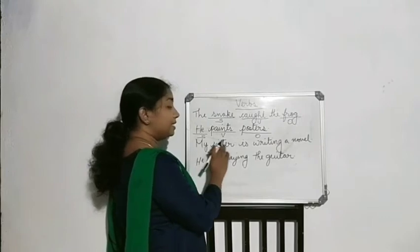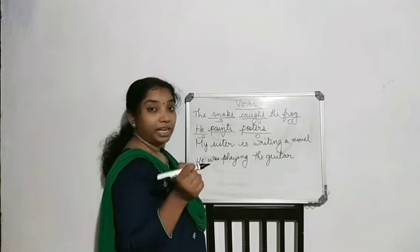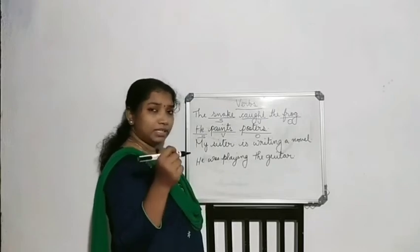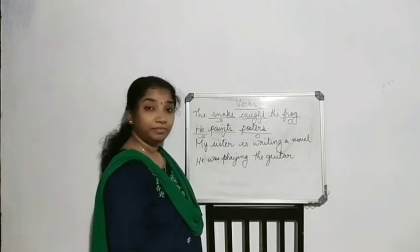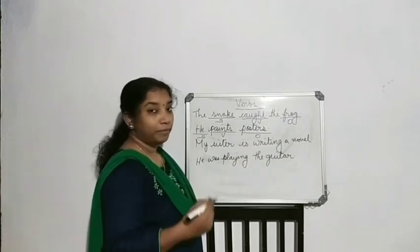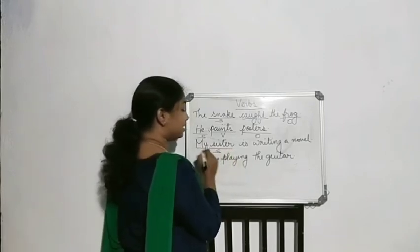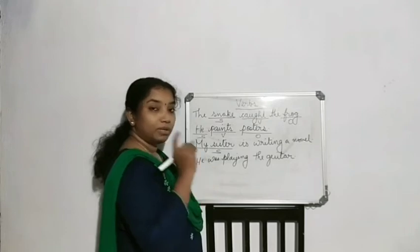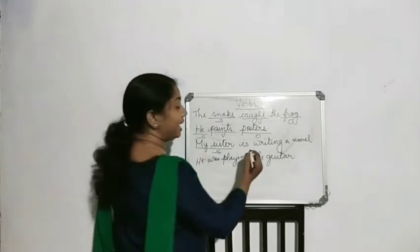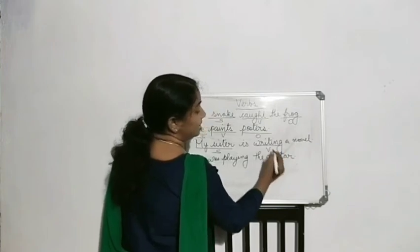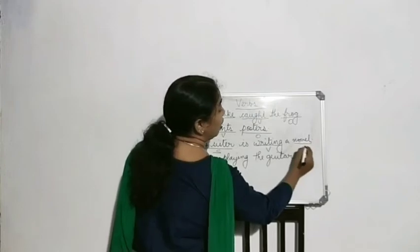Next: 'My sister is writing a novel.' Which is the subject here? Who is performing the action? My sister — so this is the subject. What is the verb? What is the action taking place? It is writing — that is the verb. And novel is the object.